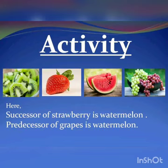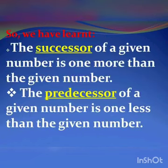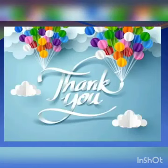And if I ask what is the predecessor of grapes? So today we have learnt the successor of a given number is one more than the given number, and the predecessor of a given number is one less than the given number. I hope now it is clear to all of you. Thank you.